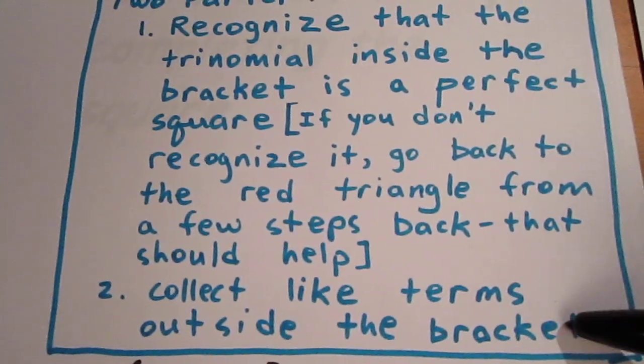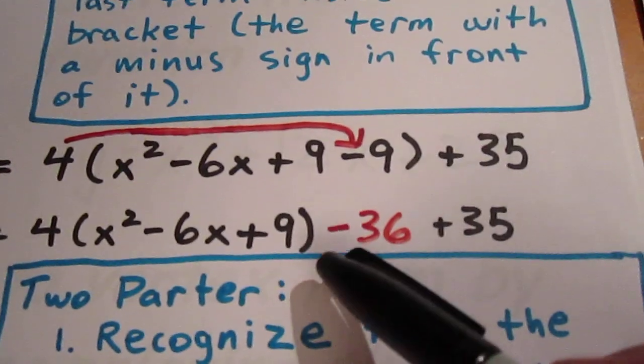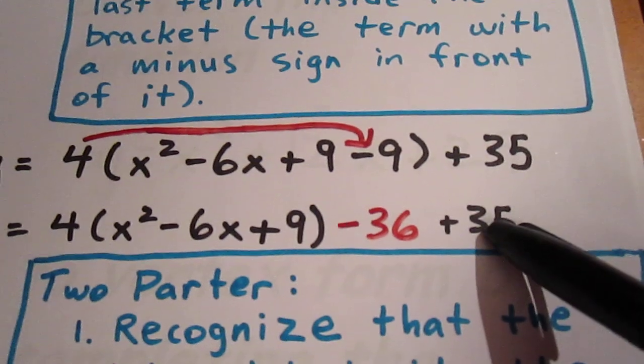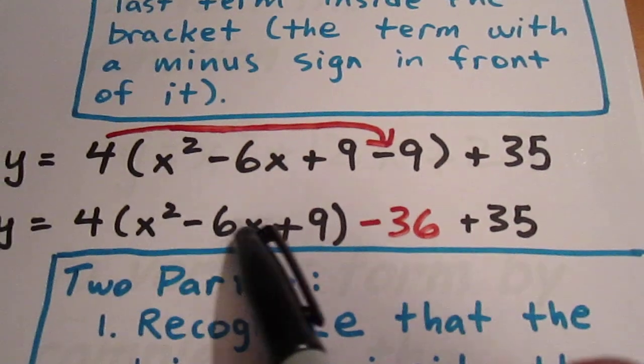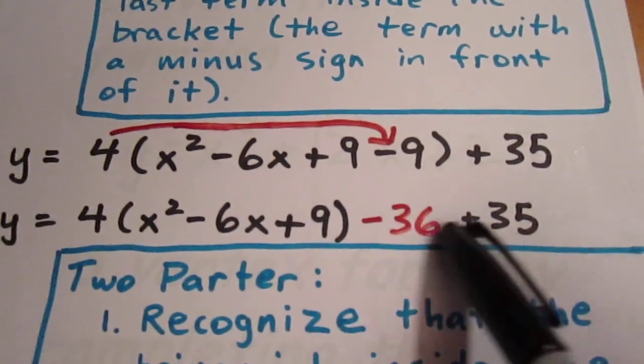We also want to collect like terms outside the bracket. We see we have -36+35. Well, that simplifies to -1. So we have 4(x-3)²-1.